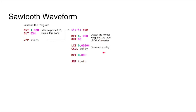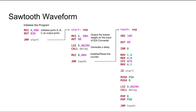Then, we would be setting a counter to count the steps in the sawtooth waveform. Then, we would be jumping to another subroutine. In this subroutine, it would be generating each step of the sawtooth waveform.